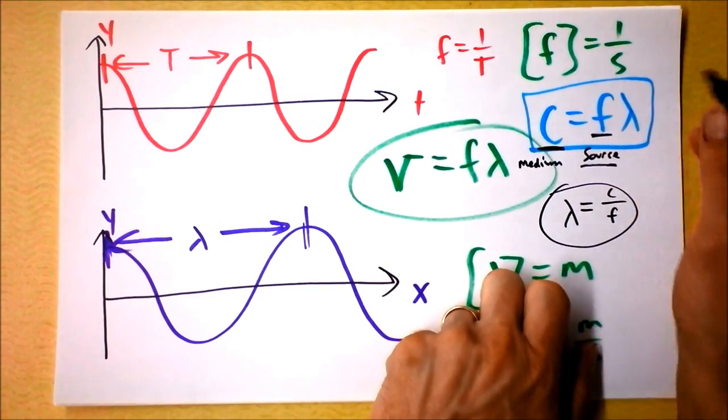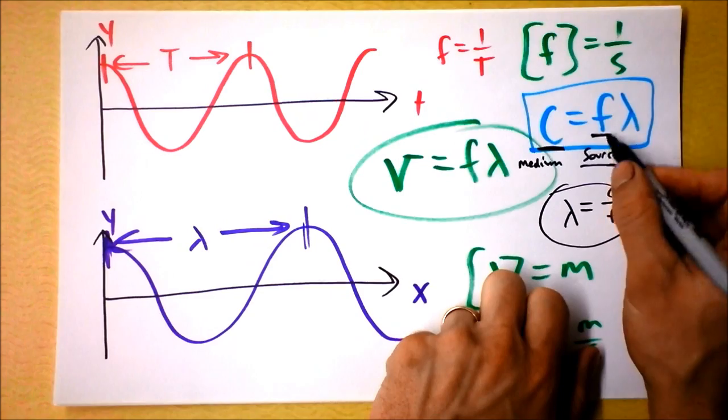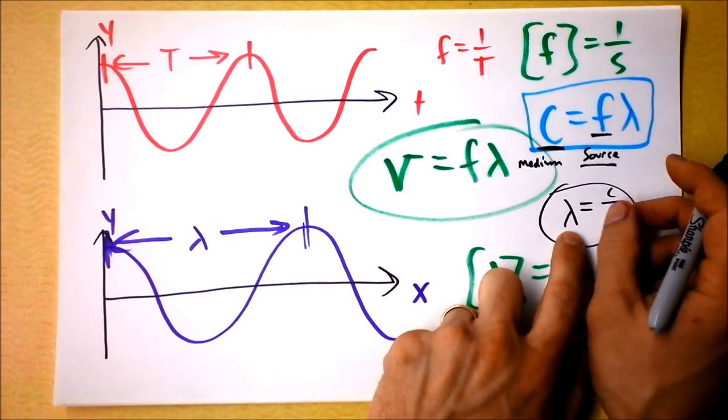So it's just a division problem to figure out what the wavelength is. You get the speed right, and you get the frequency right from the source, and the wavelength is just a result of those things.